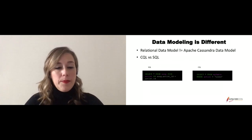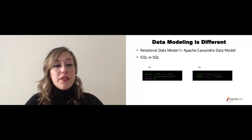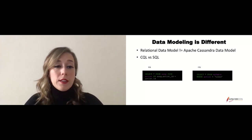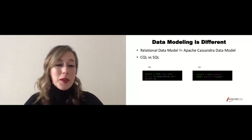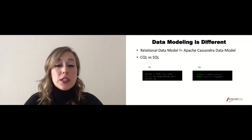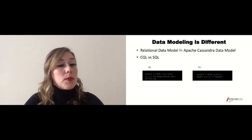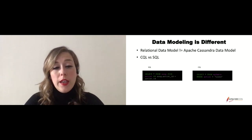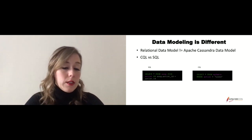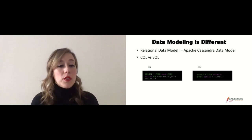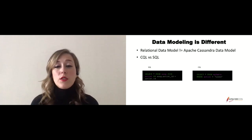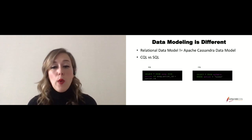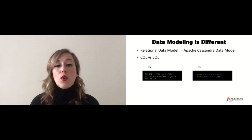Data modeling is different — that's the whole point of this talk. One thing to point out is the difference between Cassandra Query Language and SQL. In SQL you can do SELECT * FROM songs and JOIN on artists on a common artist ID, getting data back from both tables. With Cassandra Query Language, we can't do that — there are no joins. We can only do SELECT * FROM my_table WHERE artist equals whatever I'm looking for based on how I've partitioned the data.